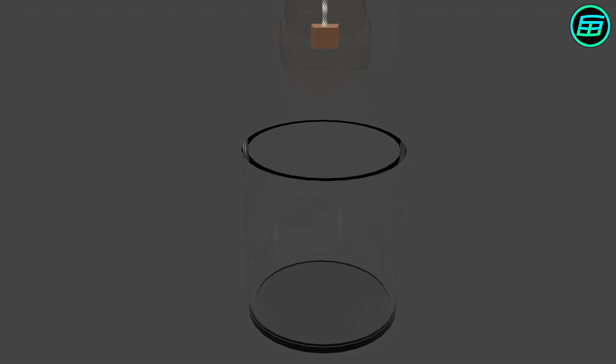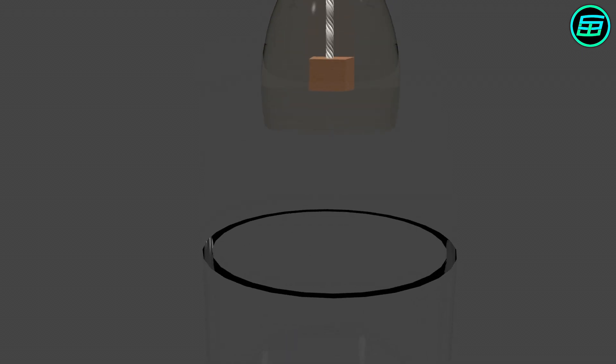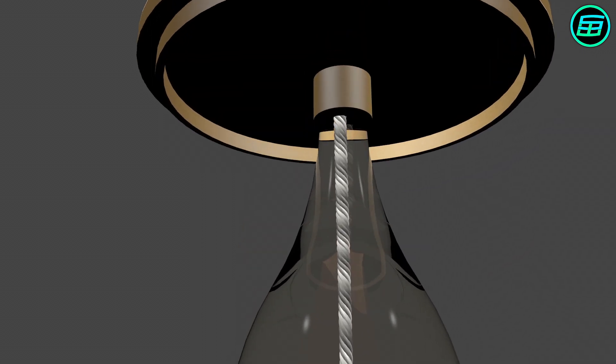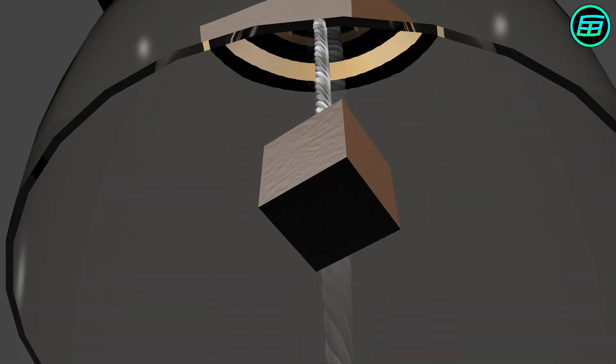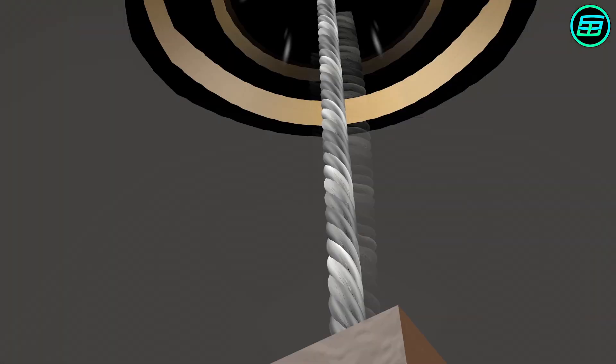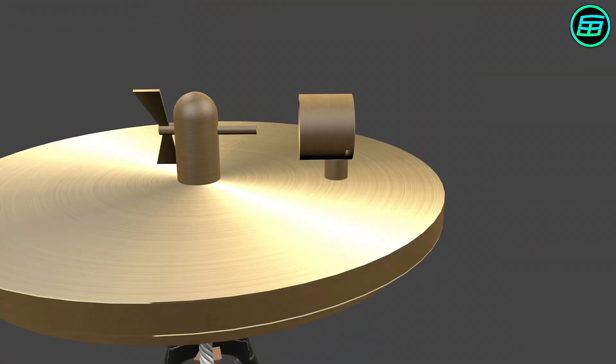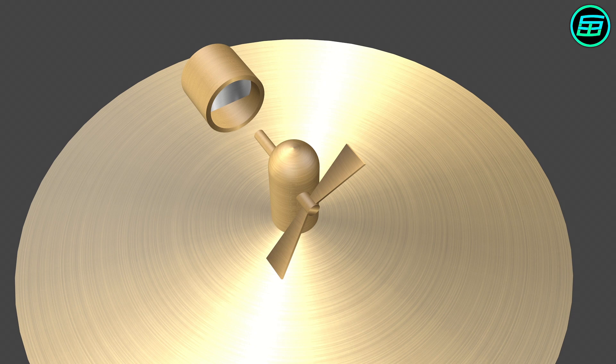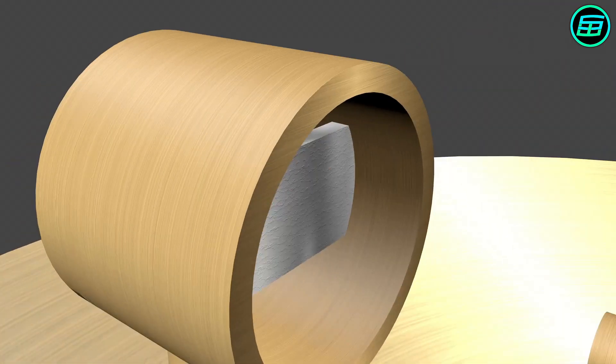Döbereiner's lamp consists of a glass cylinder, an inner chamber made of glass, a piece of zinc metal, a wire, a stopcock, a nozzle, and a platinum sponge.